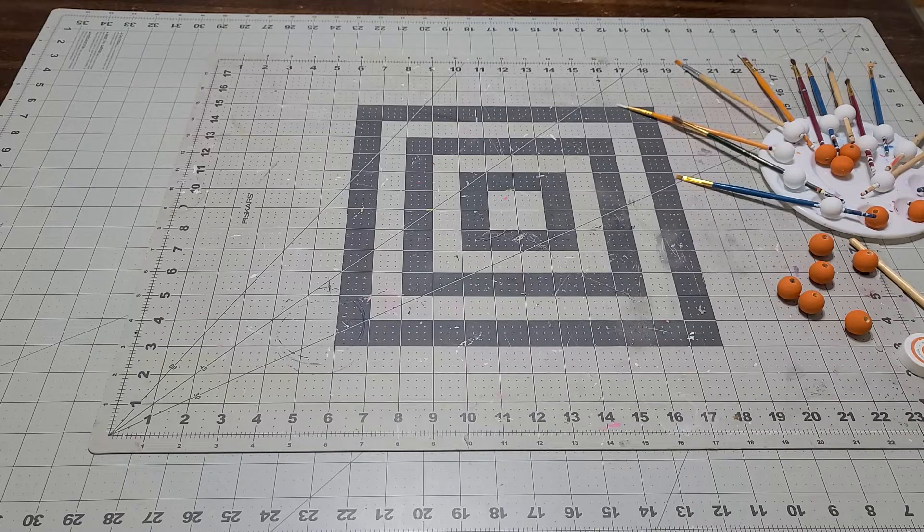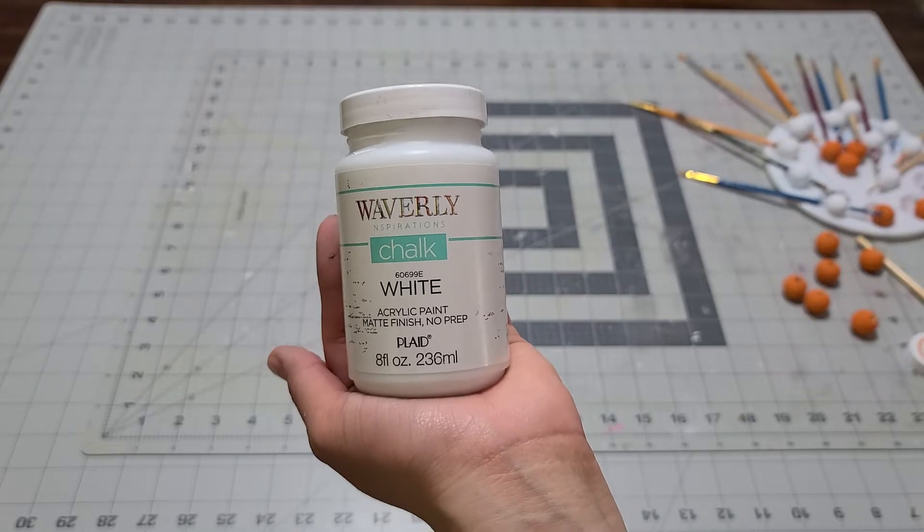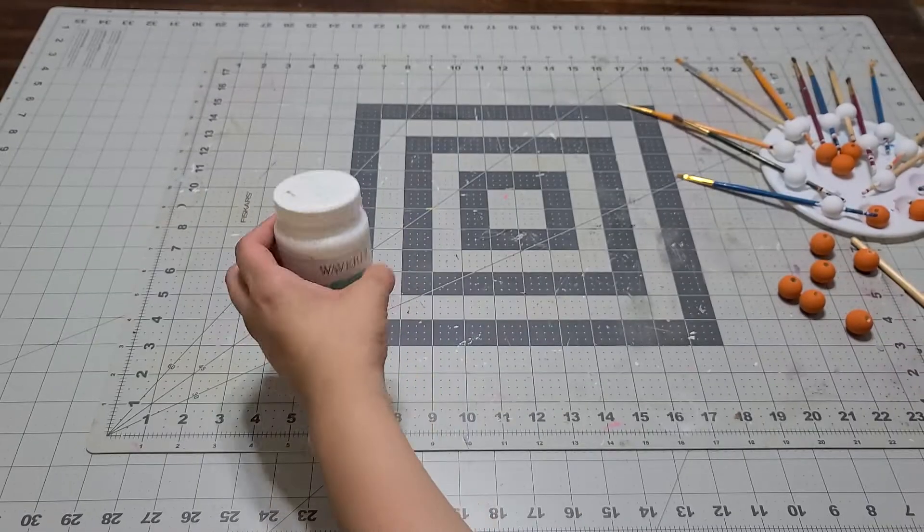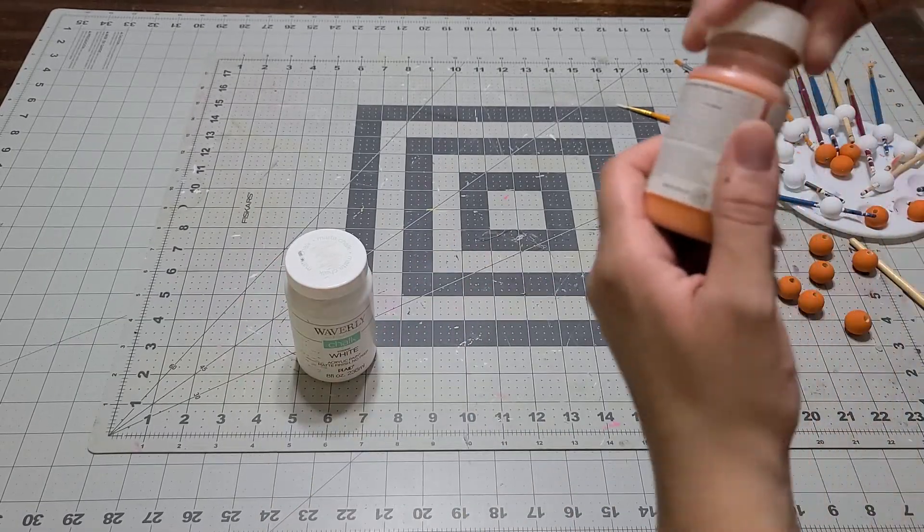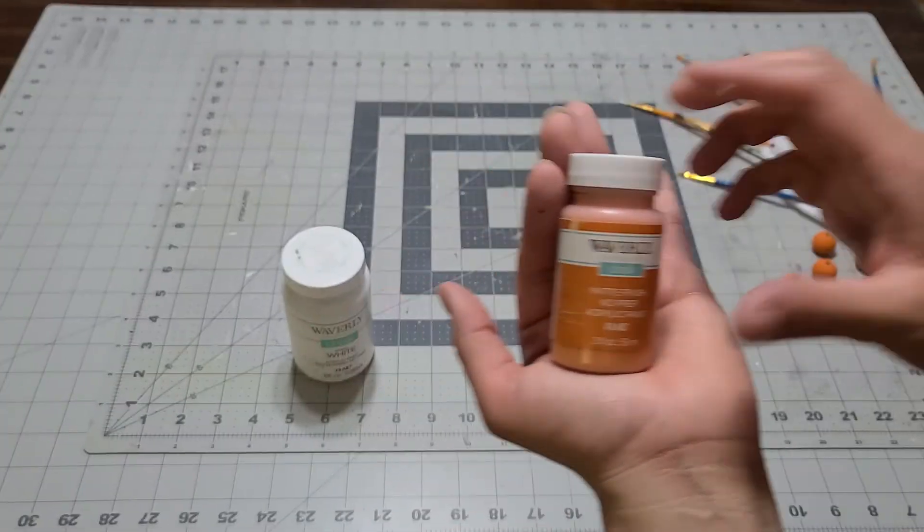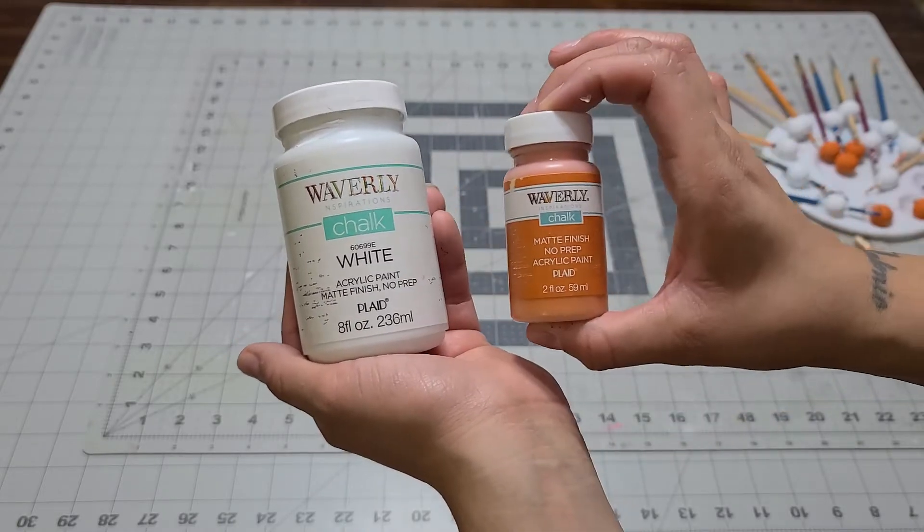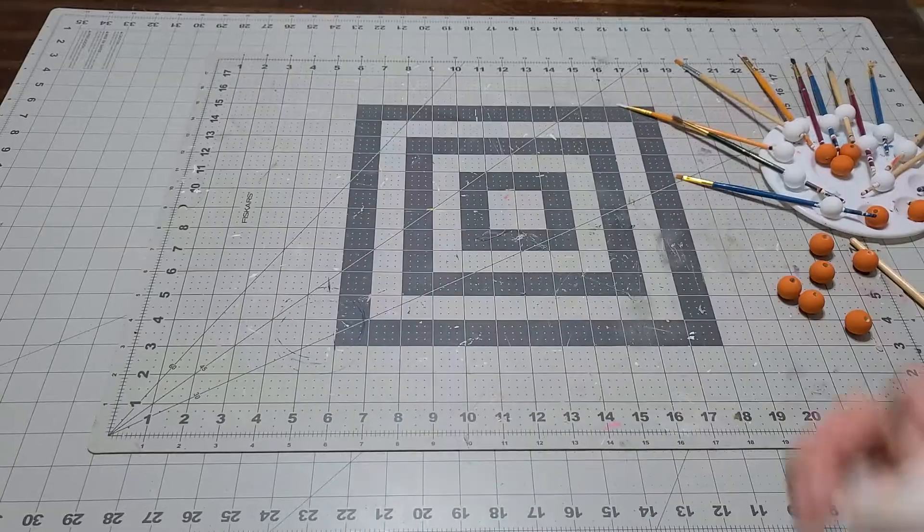I used white chalk paint and this beautiful orange chalk paint, both from Walmart. You can buy the two-ounce or the eight-ounce size. If you want both of the small ones, that's even better.